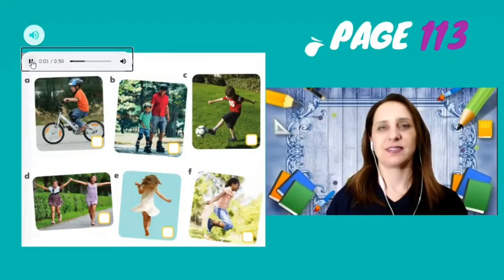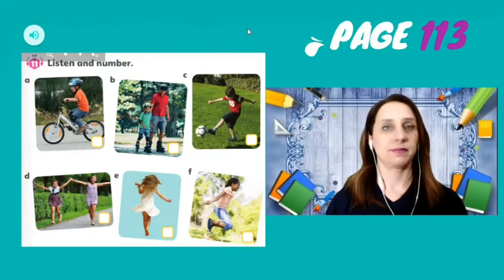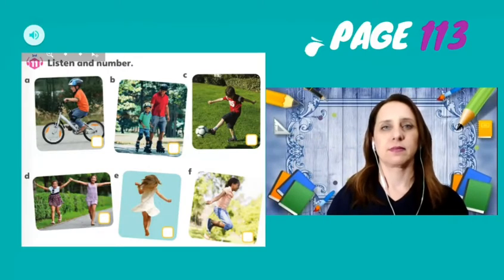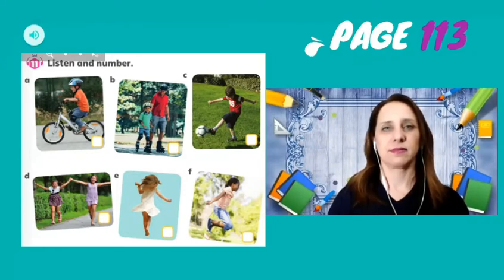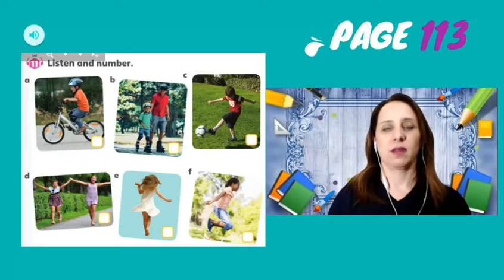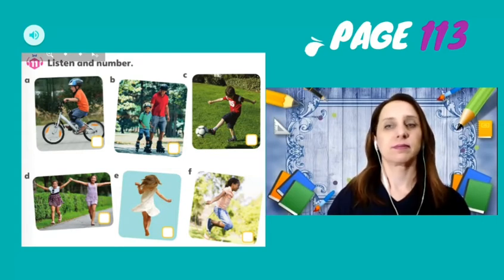Student's book, page 113, activity 11 — listen and number. Number 1: Are you dancing? No, I'm not. I'm jumping rope. Number 2: Are you riding a bike? Yes, I am. Number 3: Are you hitting a ball? No, I'm not. I'm kicking a ball. Number 4: Are they skating? Yes, they are.